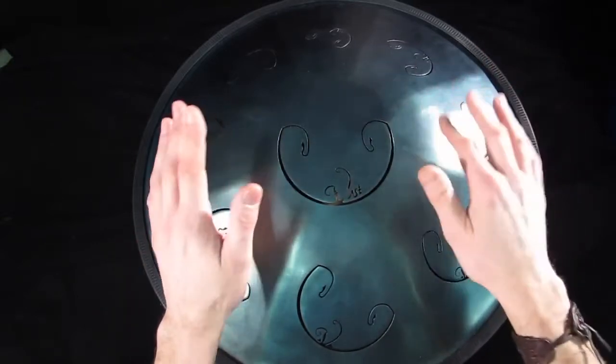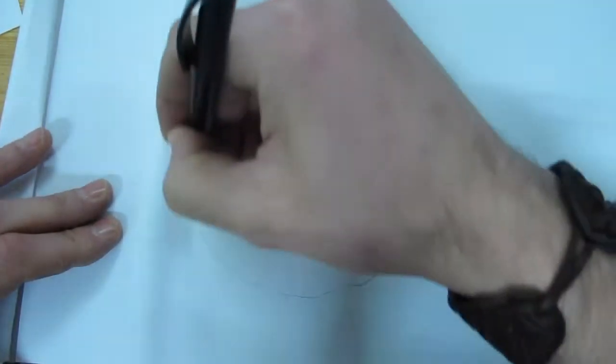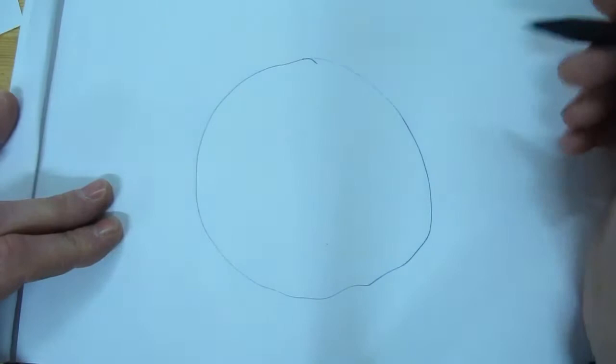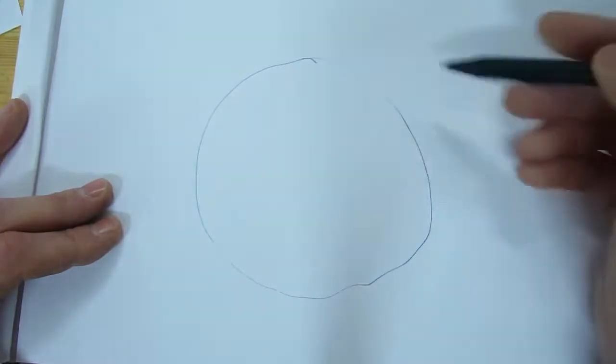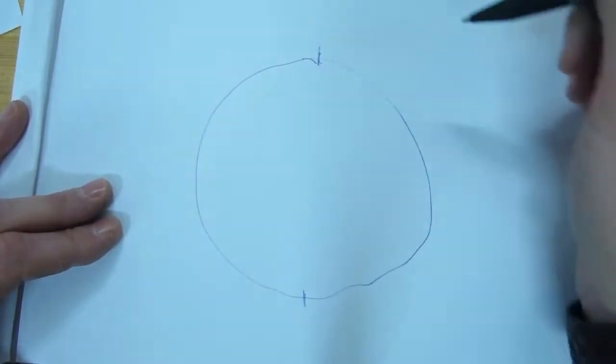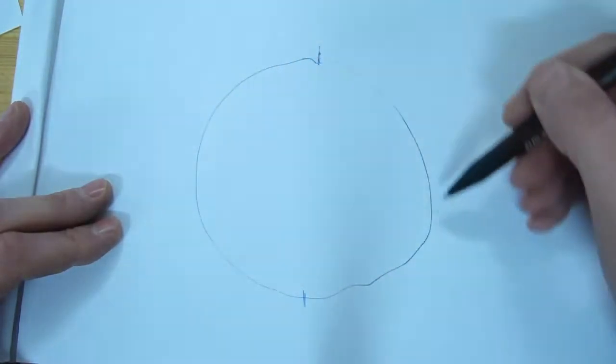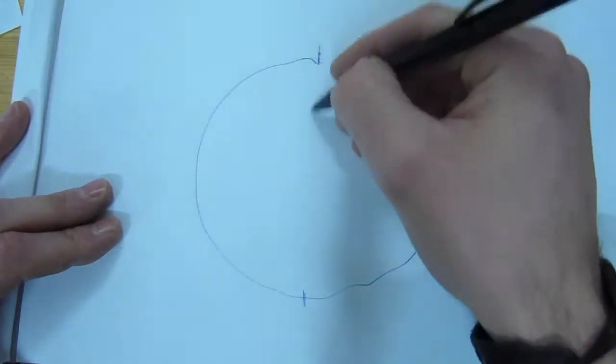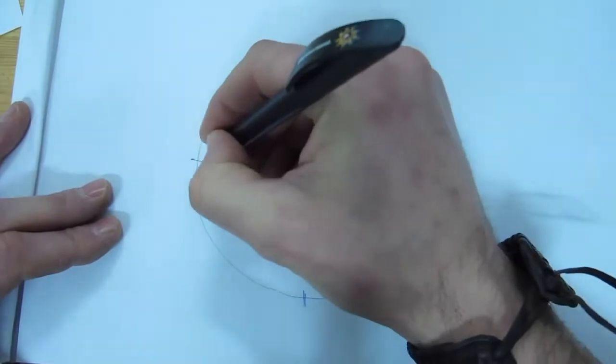But before getting started, I'll tell you more about the 4-4 time signature. Imagine the circle being a sequence of a rhythm. While traveling along the line, we will divide the circle in two halves. We now have two markers: one, two, one, two. If we divide this circle once again, we get four markers, which equals a 4-4 time signature.